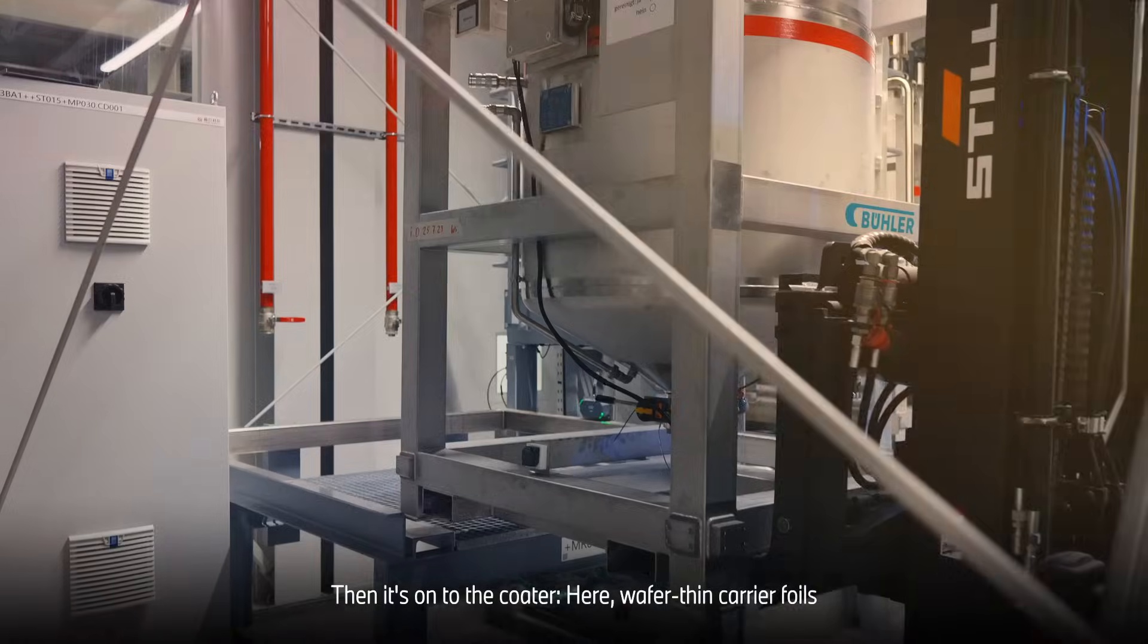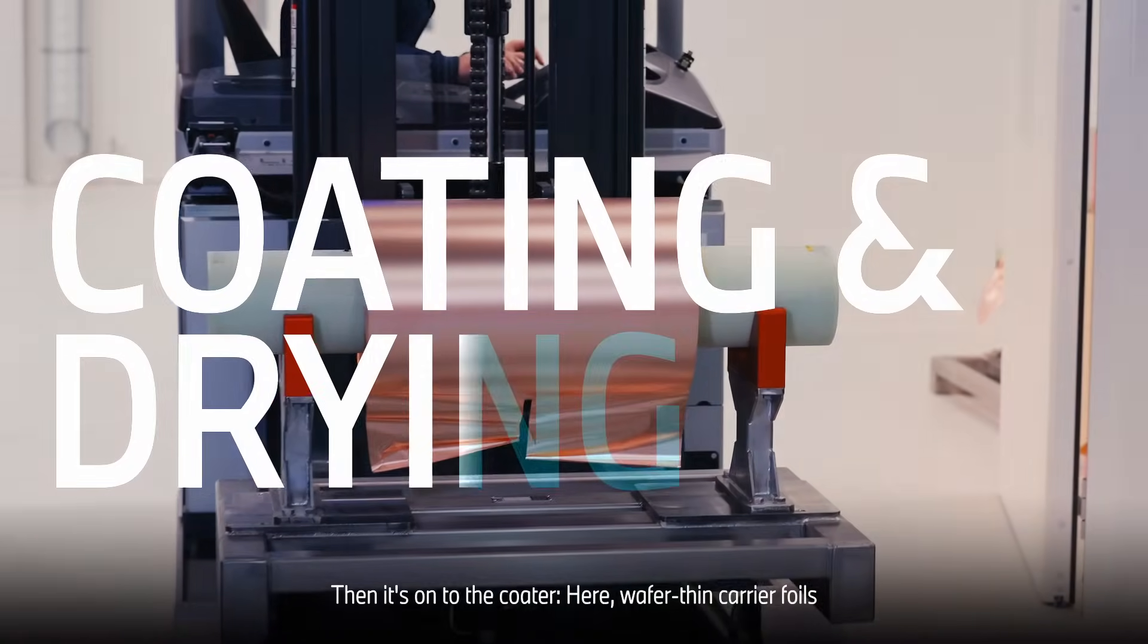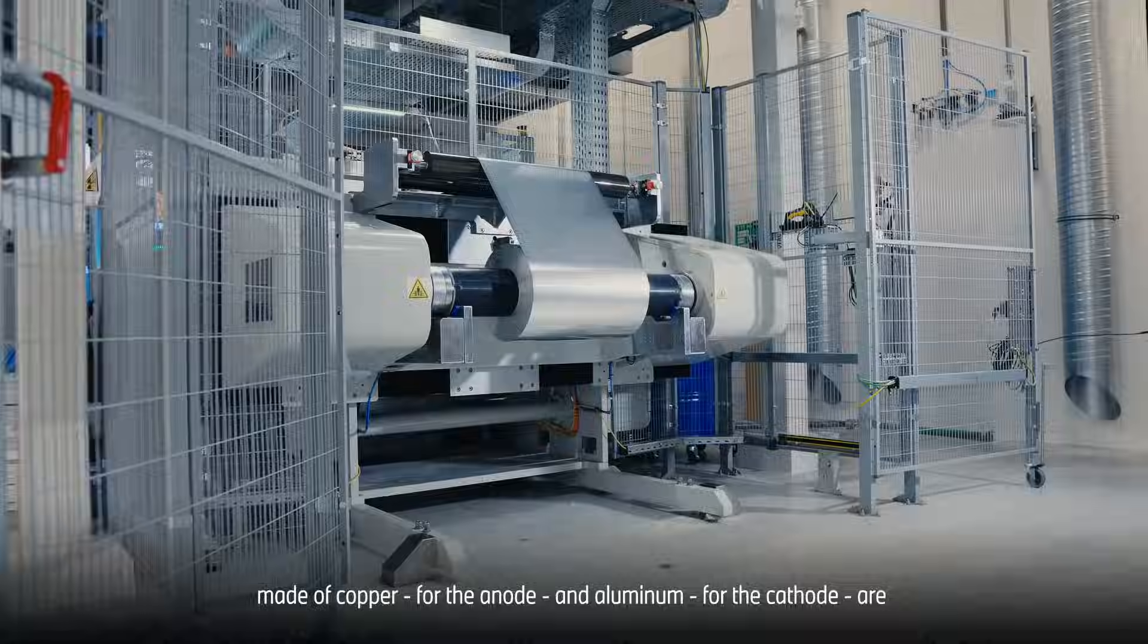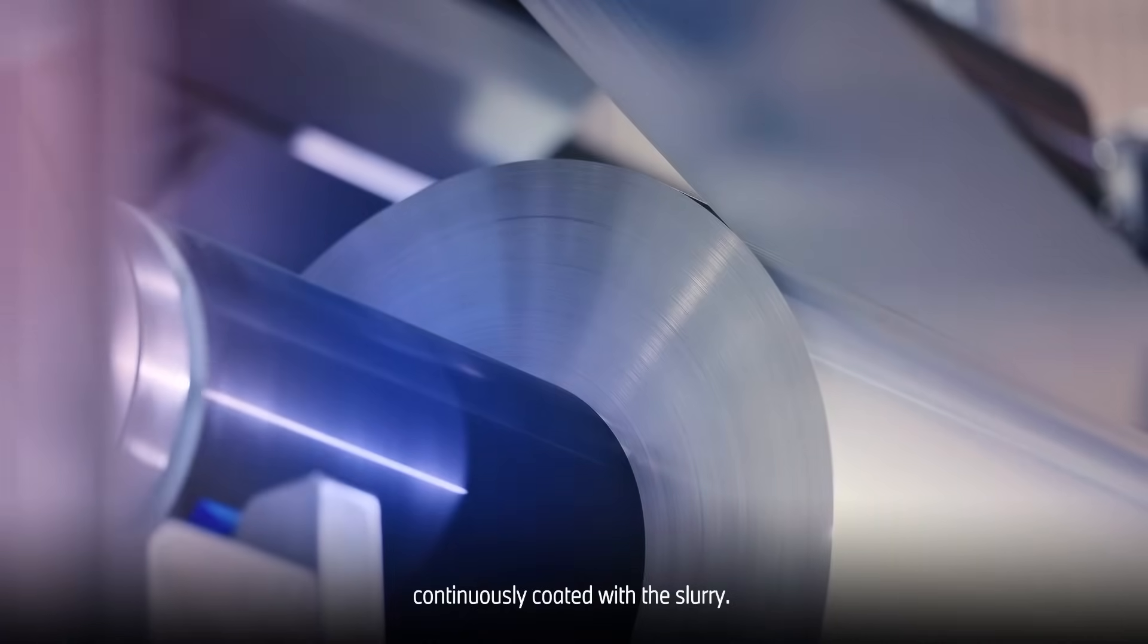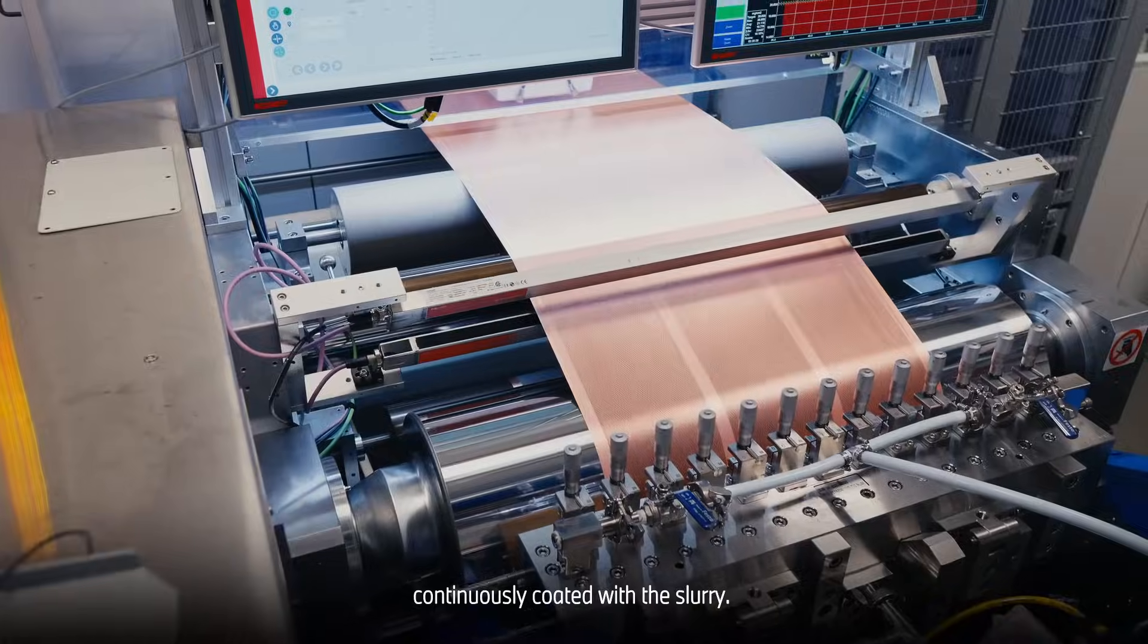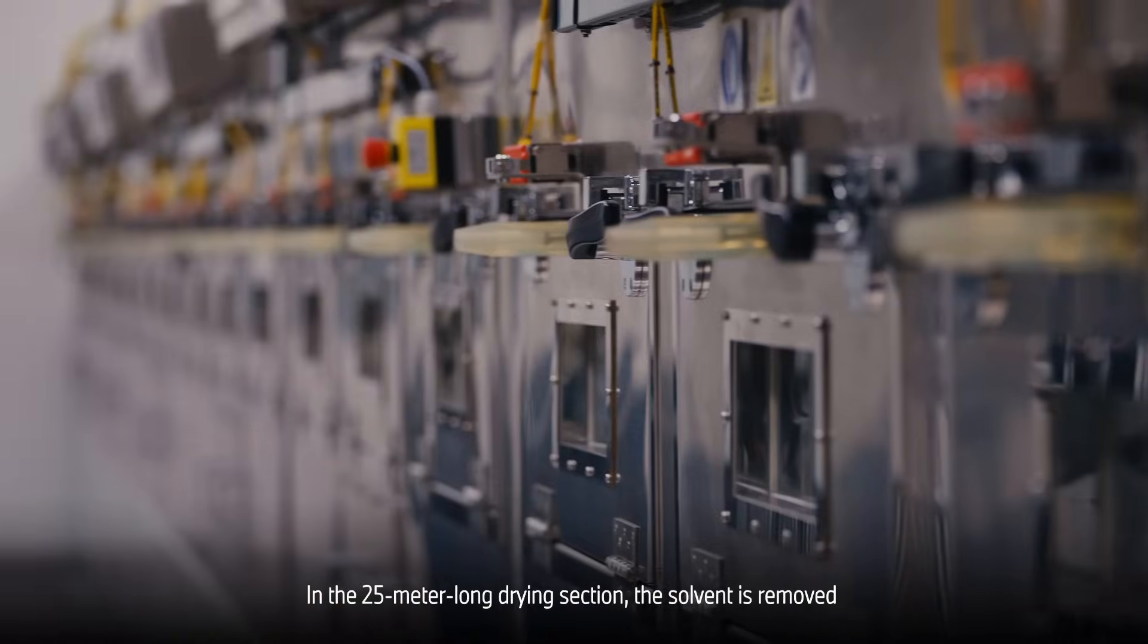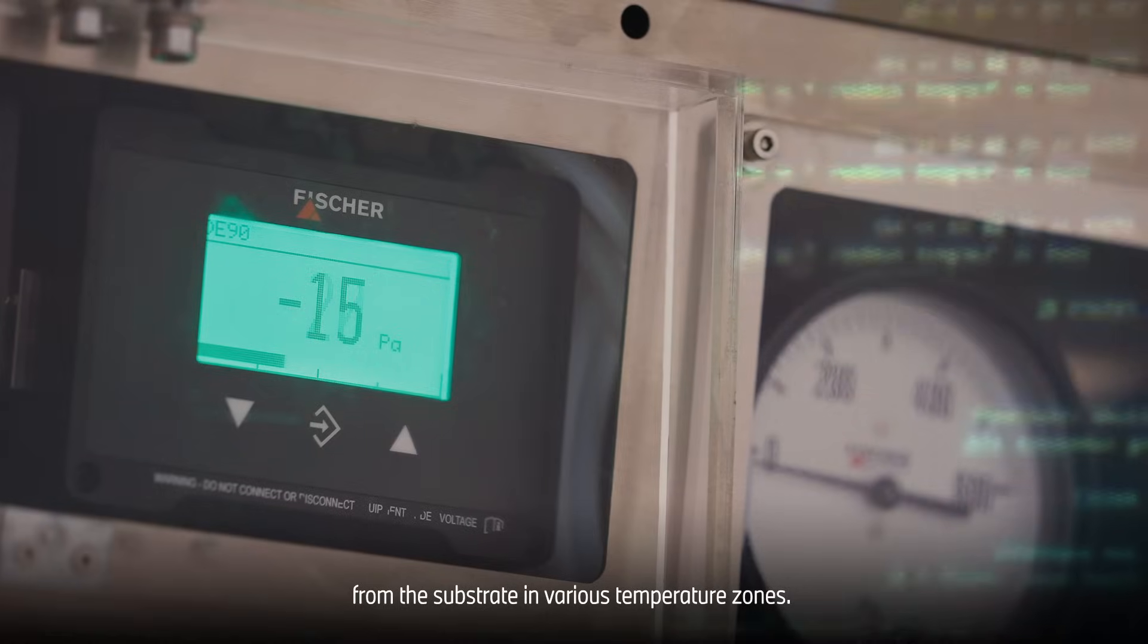Then it's on to the coater. Here, wafer-thin carrier foils made of copper for the anode and aluminum for the cathode are continuously coated with the slurry. In the 25-meter-long drying section, the solvent is removed from the substrate in various temperature zones.